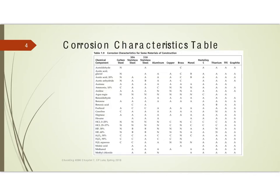This is page one of the table, and what you're seeing is a list of chemical compounds — it's not a very complete list, which is why you need these other resources. For a particular chemical, say acetaldehyde up here at the top, it says N under carbon steel, so don't do carbon steel. But you get an A rating with 316 stainless, Hastelloy C, titanium, TFE, and graphite. You get a C rating with brass, and there are no entries for some of the others.